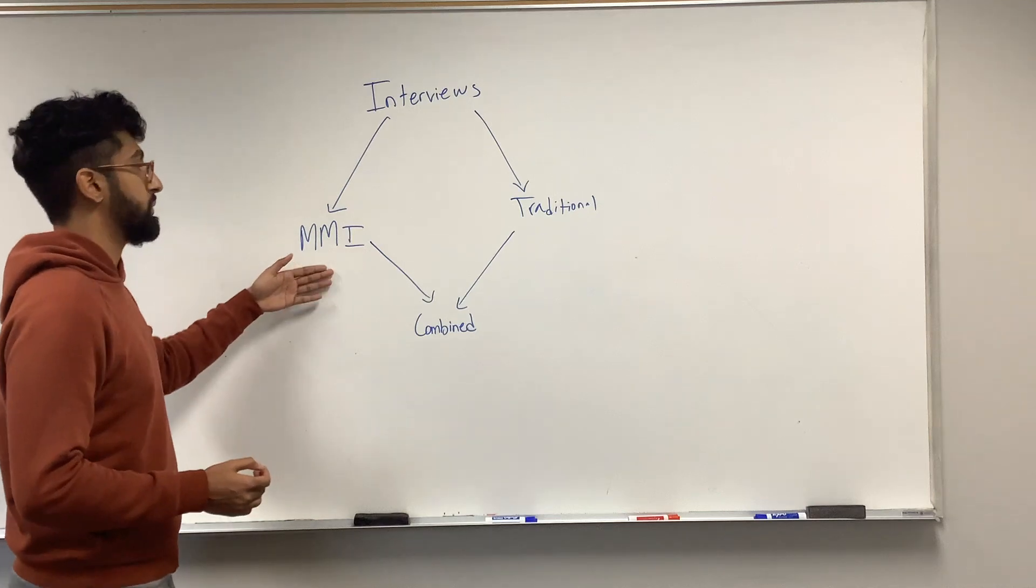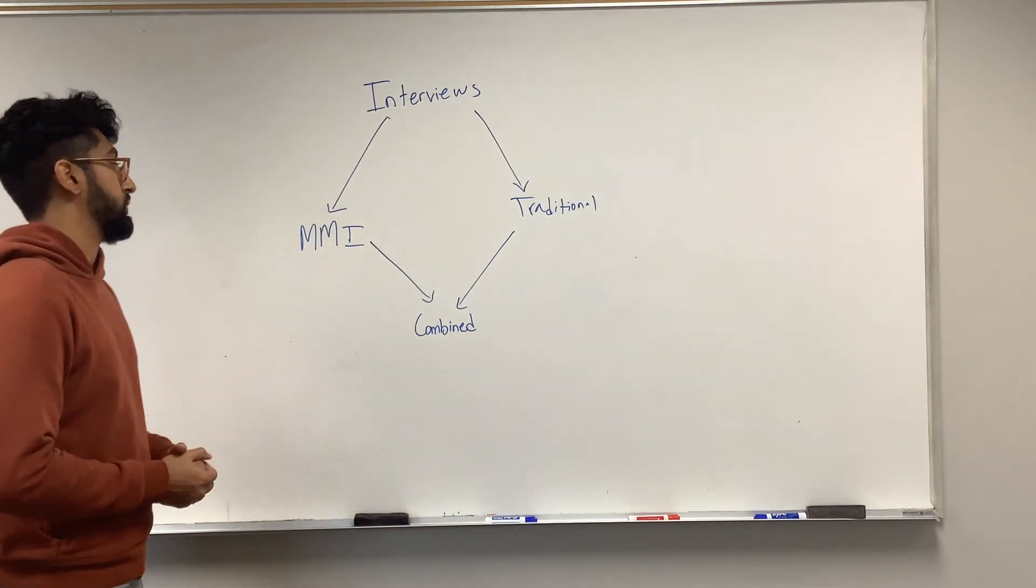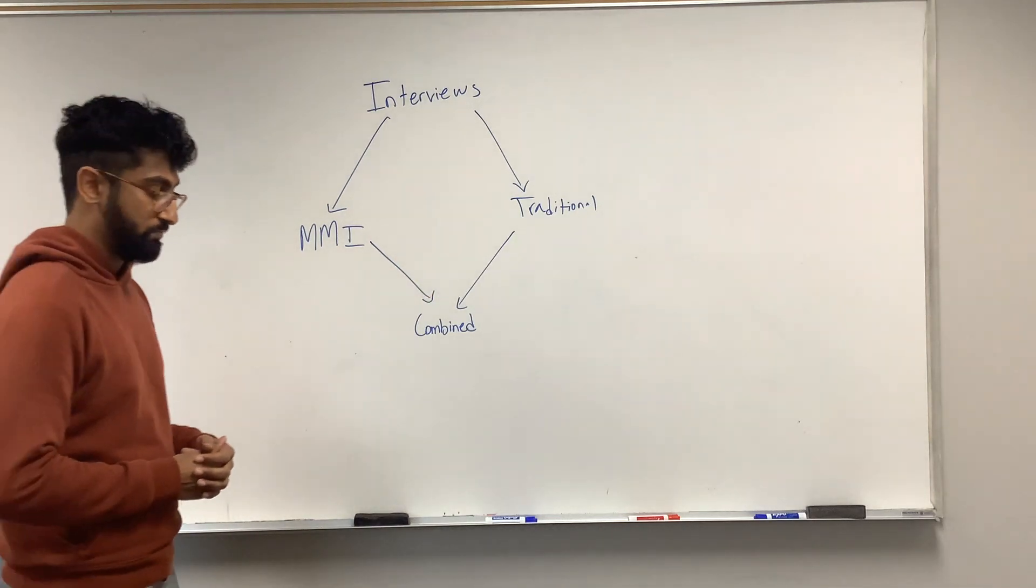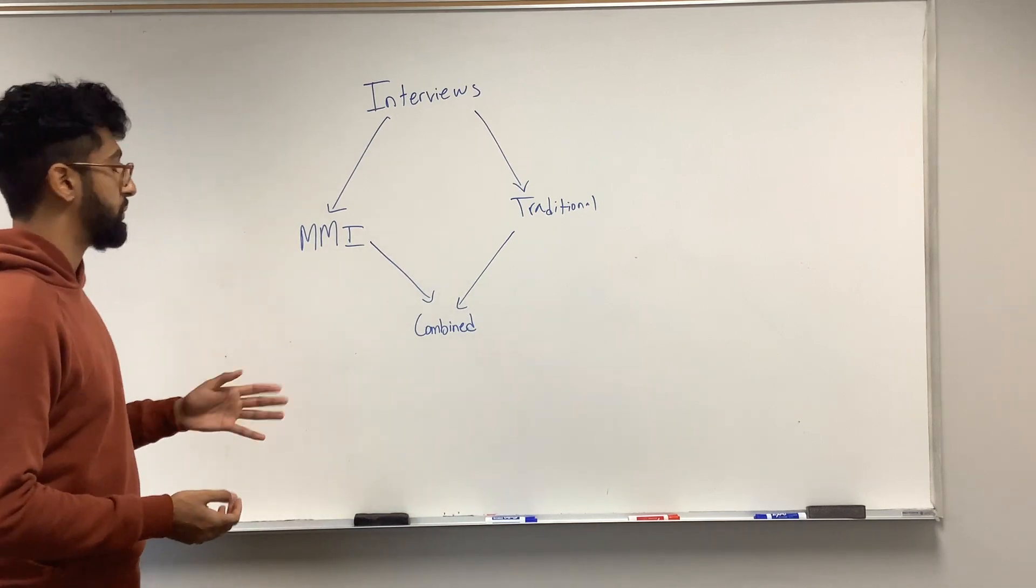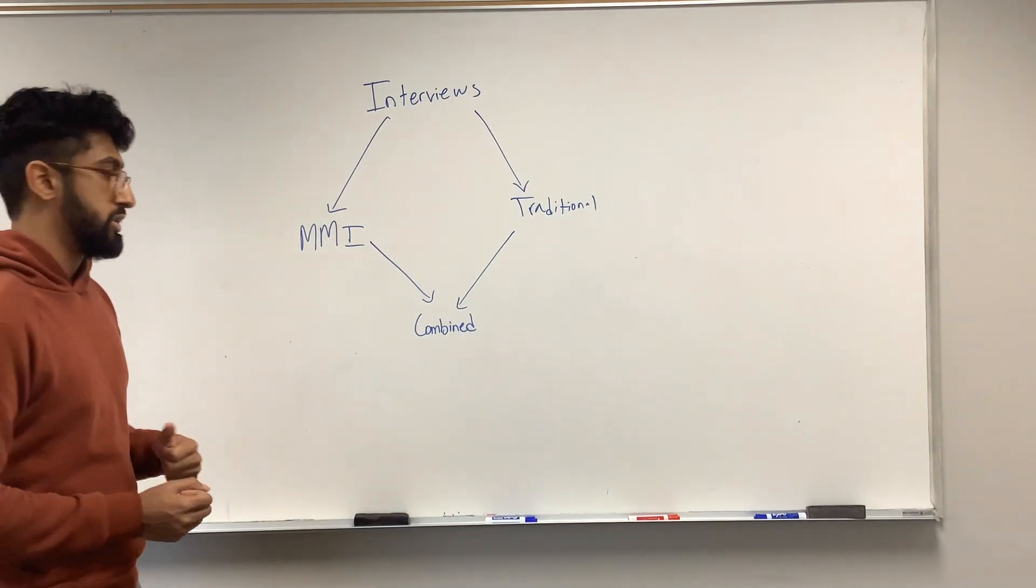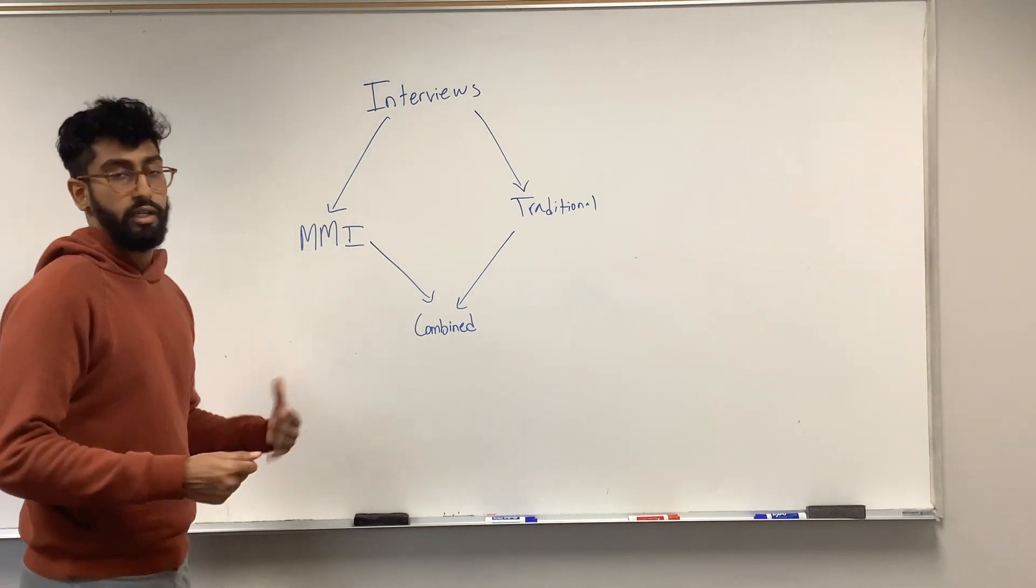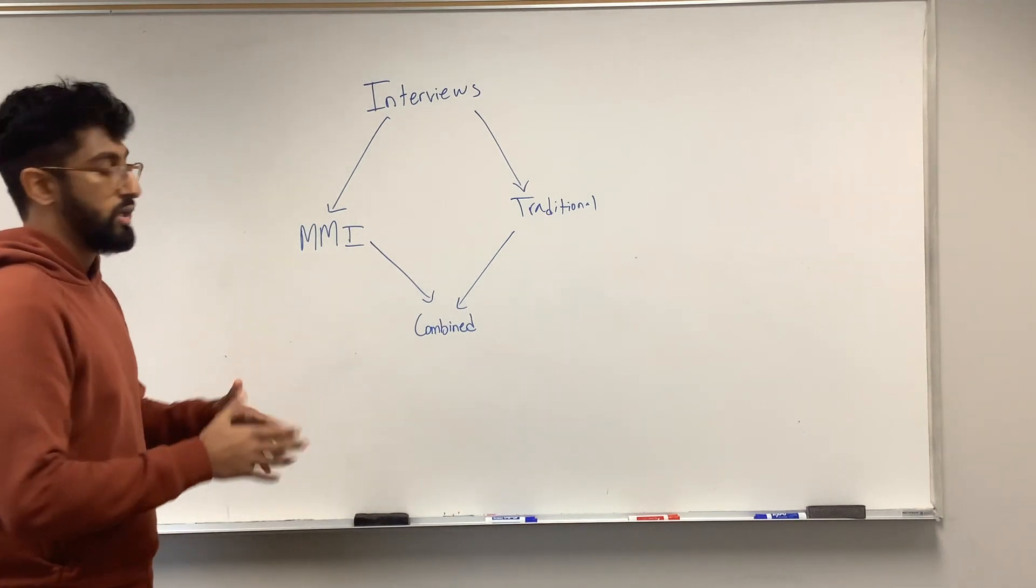The MMI is kind of like you have maybe eight stations, three minutes at each station with a different person. They're going to ask you a random question, they're going to score you on a gradient, and then at the end your scores are going to be averaged and compared to other students.